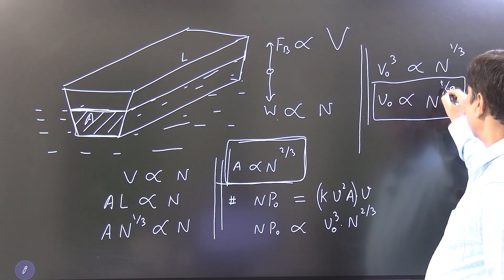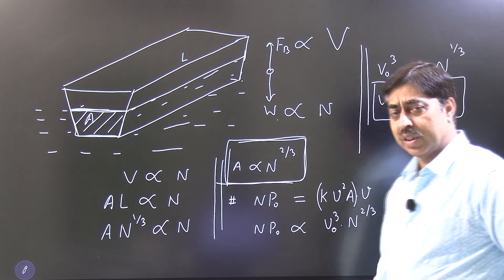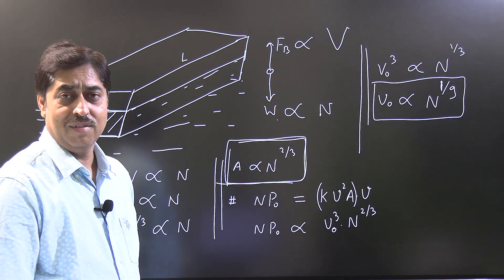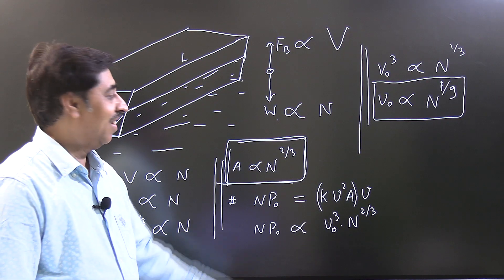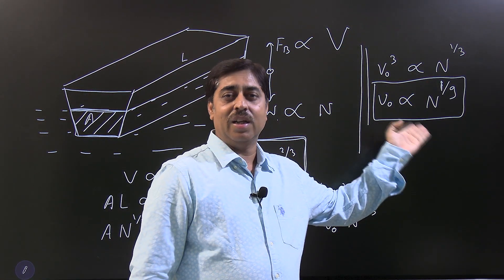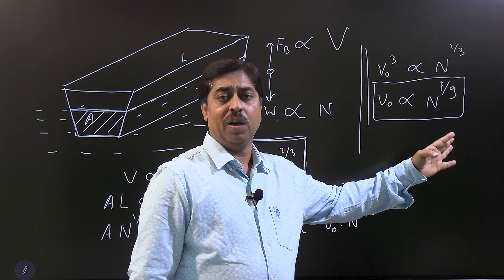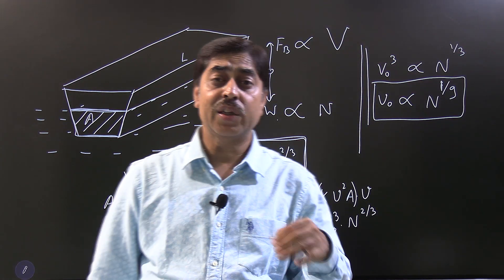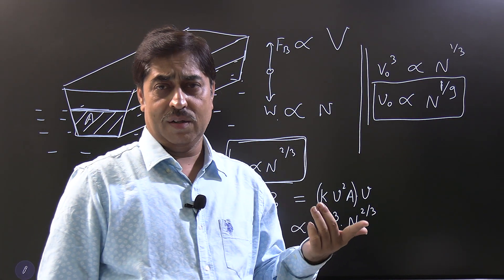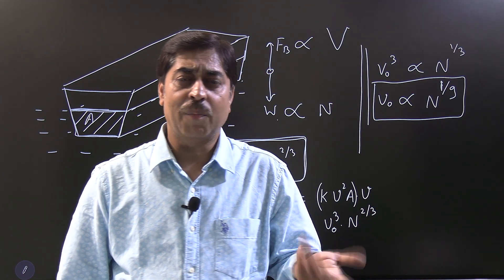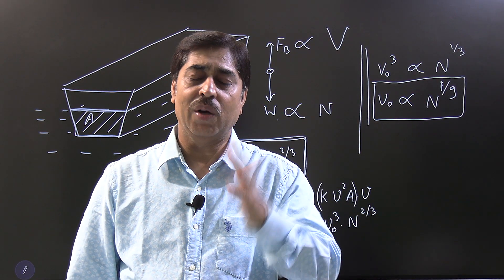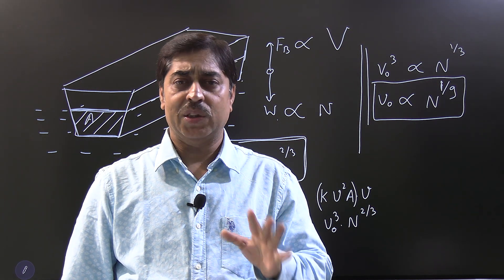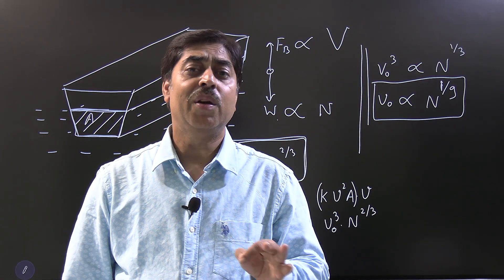So, n raised to the power 1/9 — this simply means that under the assumptions of the question, we can safely say that increasing the number of boatmen will increase the top speed, but the effect is very small. If there are 12 boatmen and you increase to maybe 15, the top speed is not going to increase much — it will increase, but not by much.